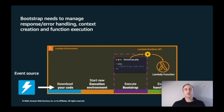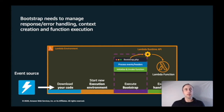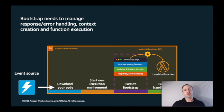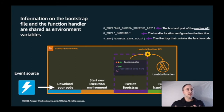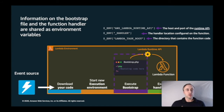The bootstrap is responsible for an invocation loop cycle that needs to do a few important things: process inbound events and headers, initialize and invoke the function, handle the function response including any errors, and manage function cleanup. There are key environment variables available to your bootstrap file: one holds the host and port number of the Runtime API, one holds the name and location of the handler, and another holds the directory where your function code sits.